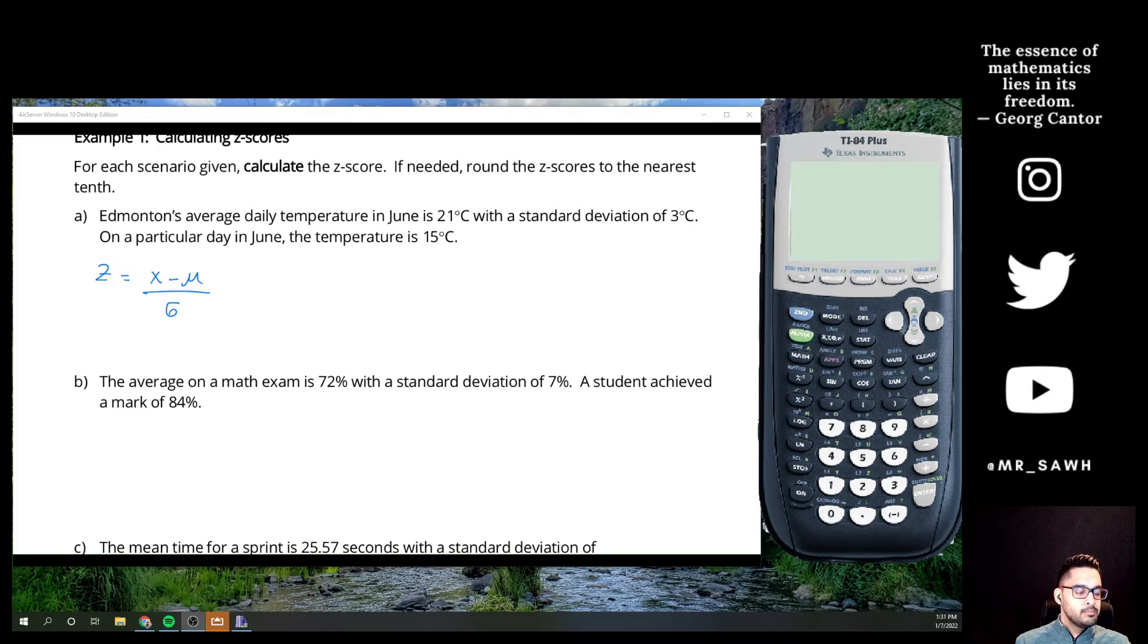So again, our formula for z-scores: a specific z-score is equal to the data value subtract the average, divide by the standard deviation. Okay, so if I plug in what I know here, if I'm looking for z-score, I don't know that. The specific data value is 15. Okay, so a specific data value of 15, minus the average temperature, so 21, divide out the standard deviation of 3.